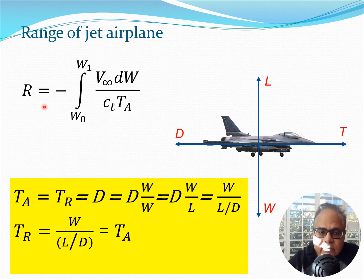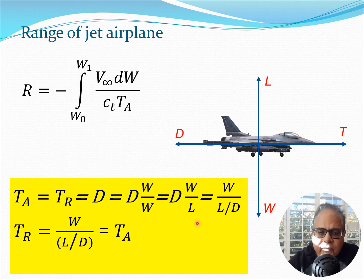To calculate the range of a jet airplane we consider steady level flight, which means lift equals weight and thrust equals drag. Therefore TA equals TR (thrust available equals thrust required), which also equals drag. We can write drag as D·W/W, which equals D·W/L since weight equals lift in steady level flight. This gives us TR equals W divided by (L/D), which equals TA.